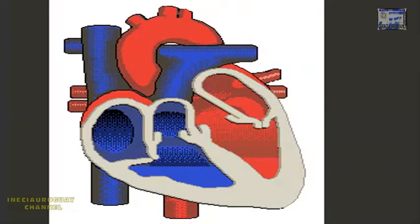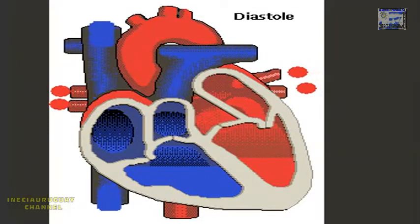There are two stages in each heartbeat cycle: the systole and the diastole. In diastole, the heart muscle relaxes and blood is drawn into the two auricles.